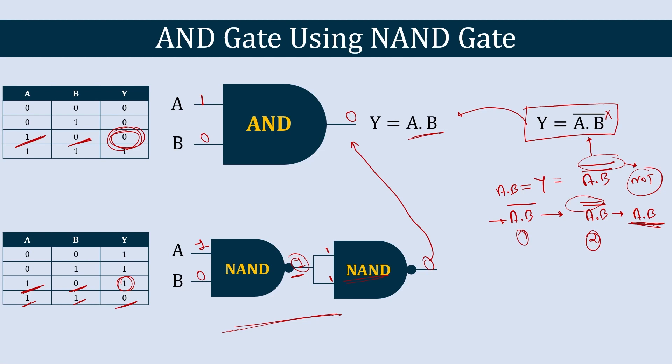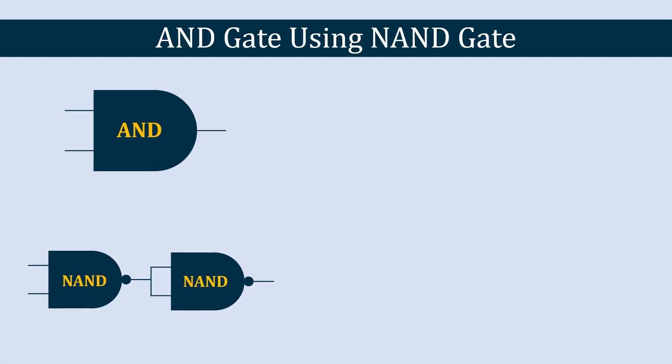I recommend that you verify the remaining three logic combinations yourself and check whether they are appropriate. If everything checks out, write in the comments below. That's how you can create an AND gate using a NAND gate.